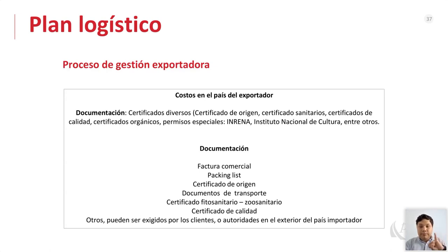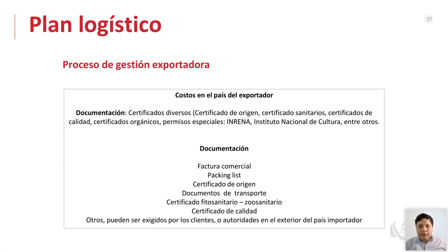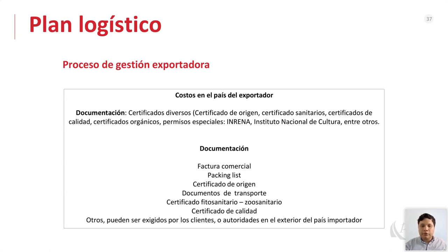La documentación que necesitas para exportar incluye: factura comercial, packing list (qué estás enviando y en qué cantidades), certificado de origen (el comprador siempre lo pedirá porque le permite exonerarse de los aranceles en el país de destino, ya que tu producto debe ser al menos 50% elaborado en el país exportador para acogerse al acuerdo comercial), certificado sanitario, certificado de calidad, y otros que exija el comprador. El certificado de origen puede otorgar cero arancel, 1% arancel, o desgravación anual según lo establezca el acuerdo comercial.